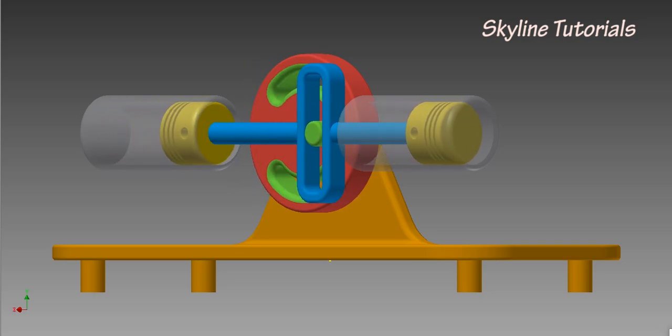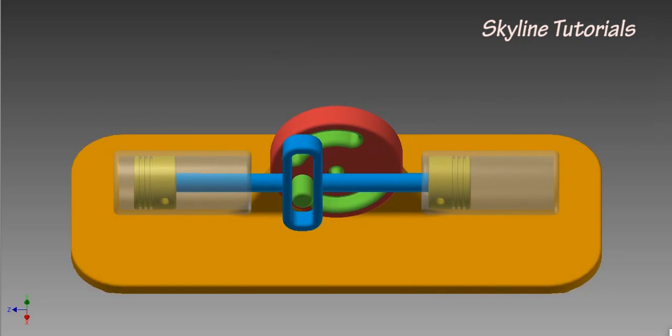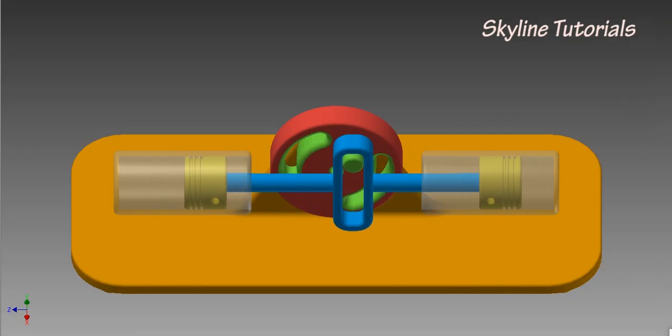Thus, the rotational motion of the crank is converted into linear motion of the piston.